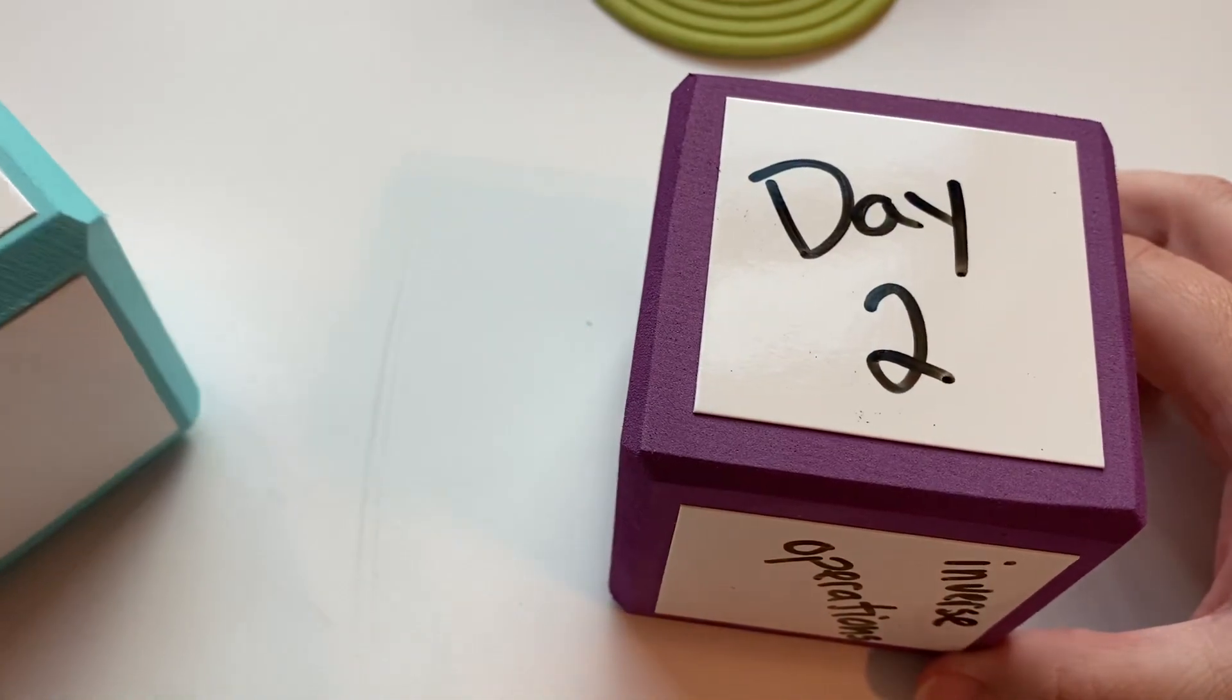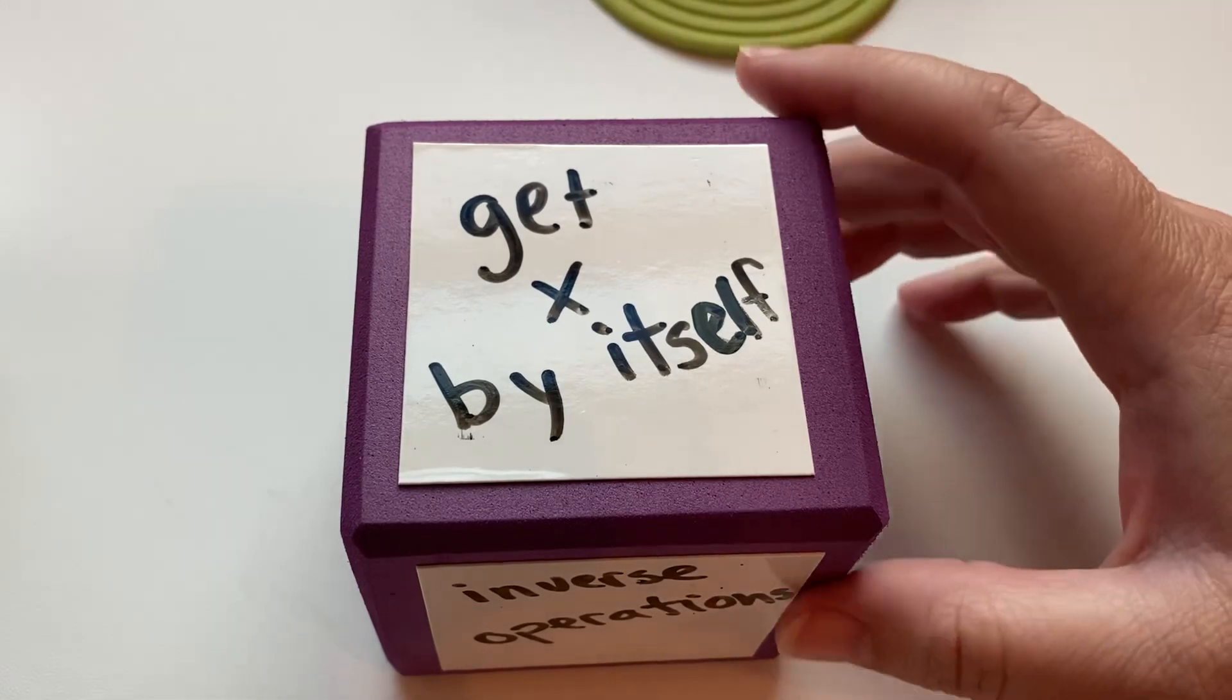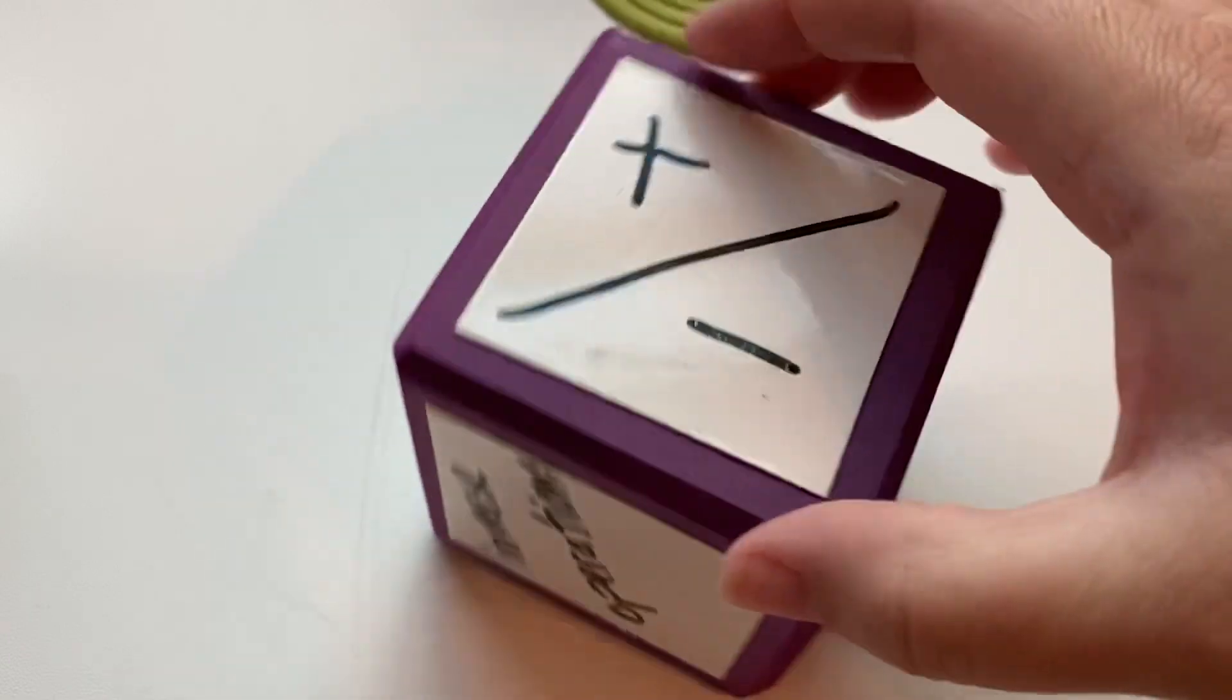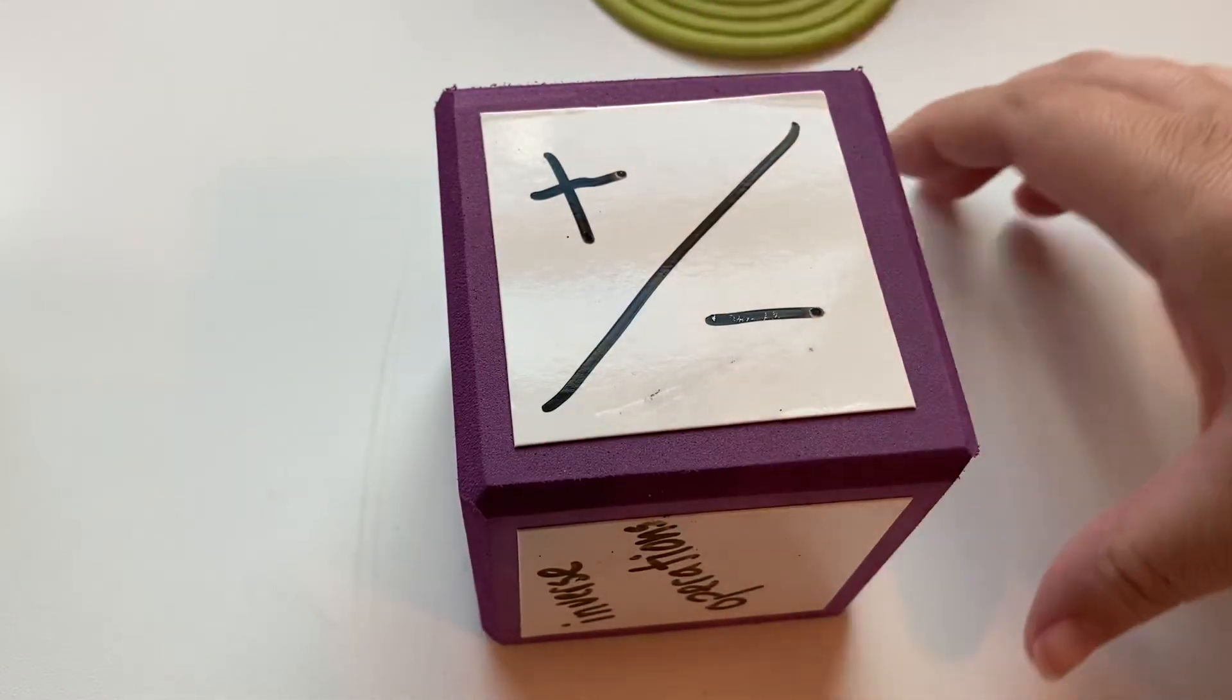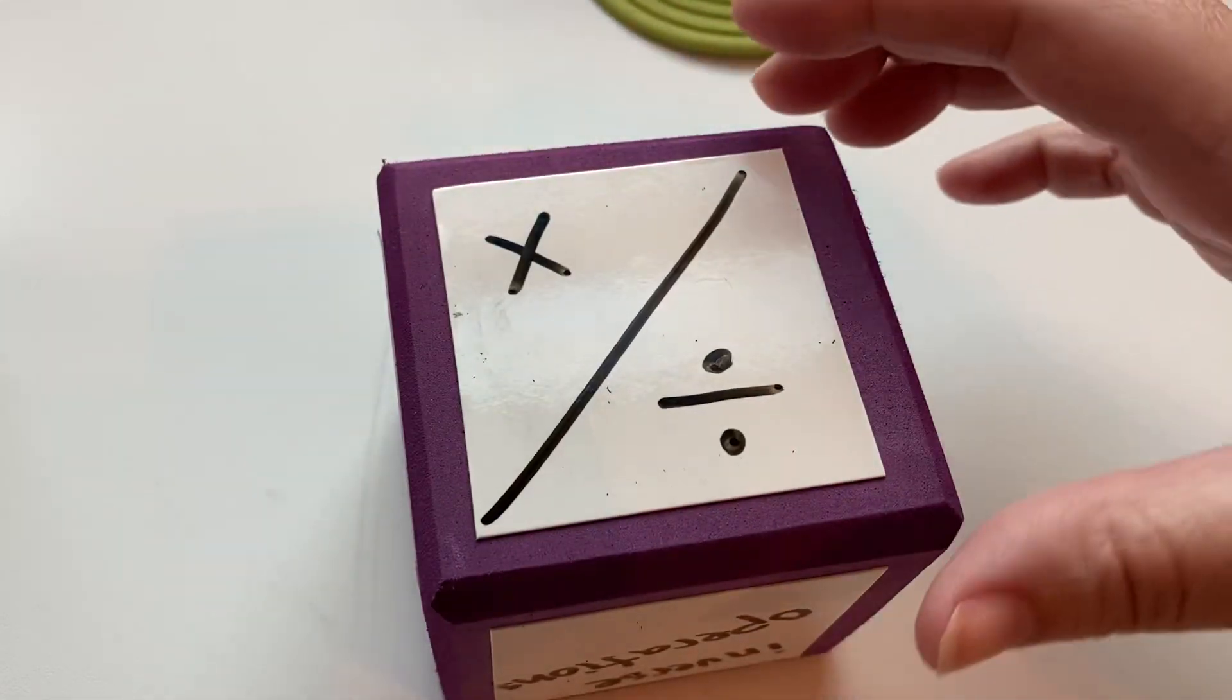So in this case, or in all multi-step equations, we're trying to get x by itself. We're going to use inverse operations. The inverse operations are plus and minus, minus and plus, and then multiplying and dividing, dividing and multiplying.